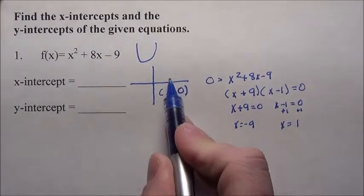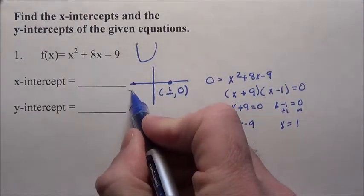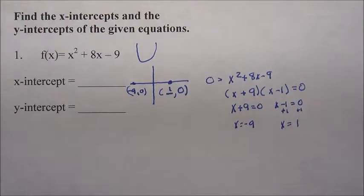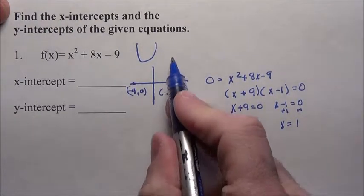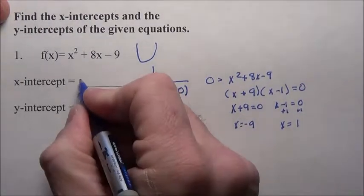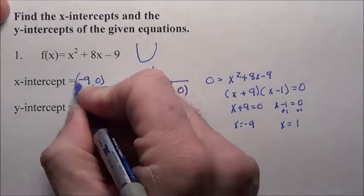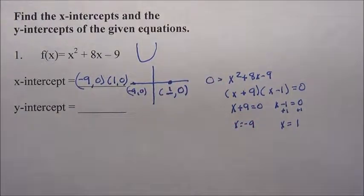It's hitting at one zero, and then it's hitting over here at negative 9, up zero. So the x-intercept occurs in two places here, because that parabola comes and hits and then goes back up. So I've got two, I've got a (-9, 0) and also (1, 0).